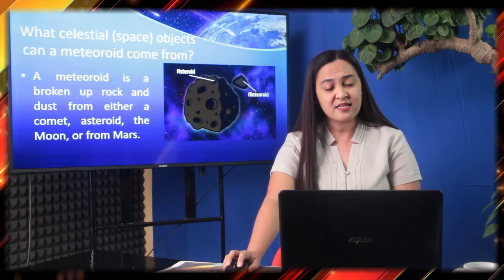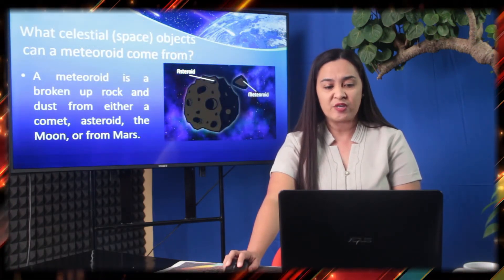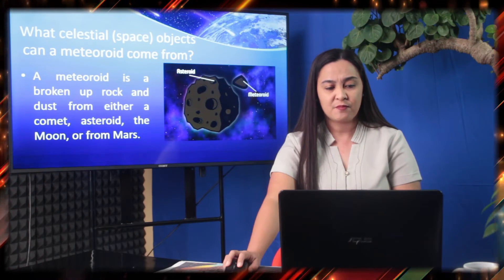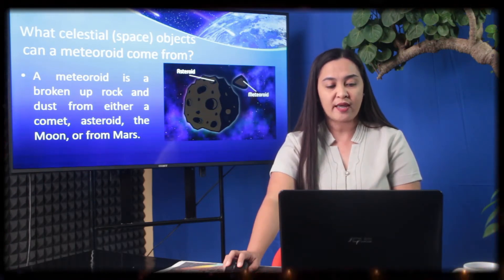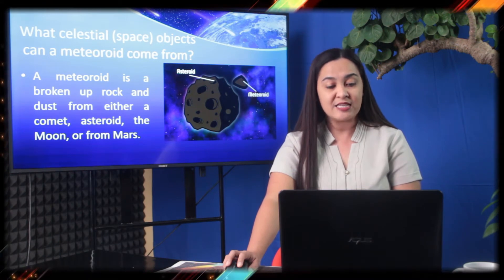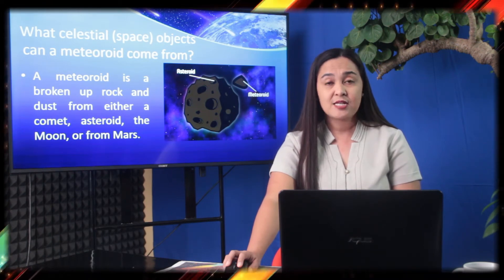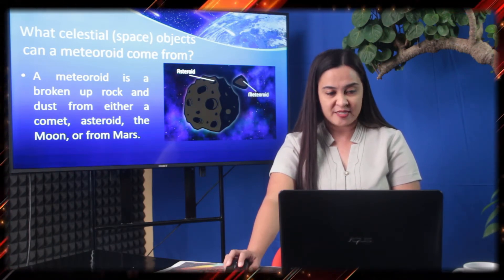What celestial object can a meteoroid come from? A meteoroid is a broken-up rock and dust from either a comet, asteroid, the moon, or from Mars.